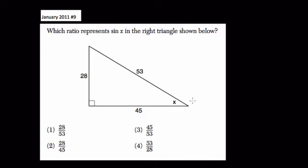Okay, so here we want to know what trig ratio represents the sine x in the triangle below. So identify x is right here, and the sine of x is represented by the ratio of the opposite side from the angle over the hypotenuse.